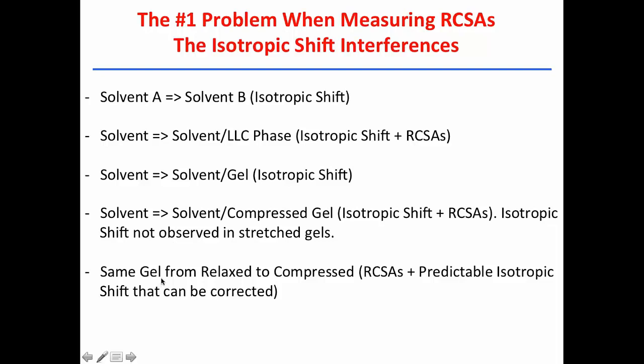So the same gel, if you put your compound in the same gel, we put the compound in the gel. Then we do not compress the gel. And then from relaxed, we go to compressed in both conditions. Then we will see the RCSAs building, and we will see a predictable isotropic shift that can be corrected. And as I said, if you use the same gel, but you go from relaxed to stretched, you see only RCSA. So there is no question that there is a big advantage of stretching, because when you stretch, you get purely RCSAs.